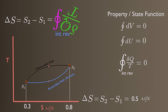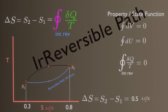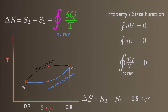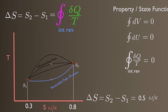Also note that the integral gives the value of entropy change only if the integration is carried out along an internally reversible path between the two states. The integral along an irreversible path is not a property, and in general different values will be obtained when integration is carried out along different irreversible paths. Therefore, even for irreversible processes, the entropy change should be determined by carrying out this integration along some convenient imaginary internally reversible path between the specified states.